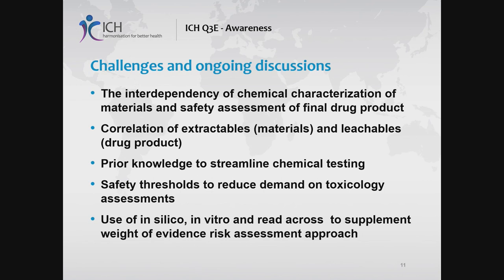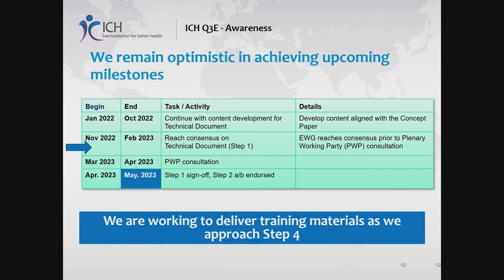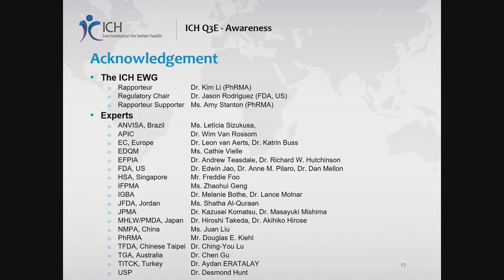We remain optimistic in achieving the upcoming milestones. We are still working toward consensus, hopefully before February 2023, and step one sign-off is not until May 2023 — a very tight timetable. We don't know what kind of comments we will be dealing with yet, hopefully not in the thousands. As we approach step four, that's when we'd like to come back and present the training materials. I want to thank our regulatory chair, our supporter Ms. Amy Stanton, and all the experts listed on the ICH official website. Thank you very much.